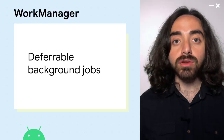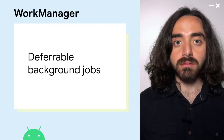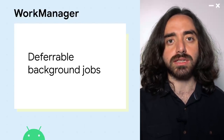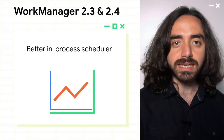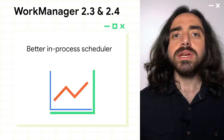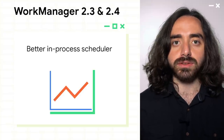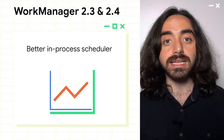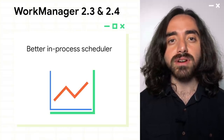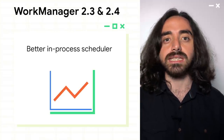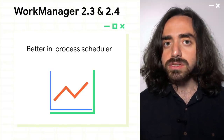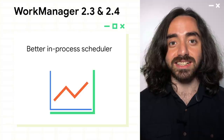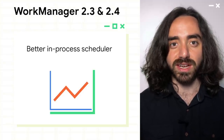Next, WorkManager — the Jetpack library that allows you to run deferrable background jobs, like sending an important email when the user is connected to the internet. Here are some highlights from the 2.3 and 2.4 releases. WorkManager doesn't only rely on JobScheduler to execute your jobs — it also has an in-process scheduler, and we have greatly improved it this year. It now supports delayed workers and periodic work requests. The scheduler also no longer imposes scheduling limits, which improves the throughput of your work requests.